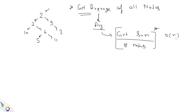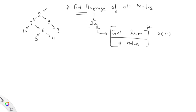Similarly, to get the number of nodes, we traverse the complete binary tree and maintain a count variable, adding one at each node. Once traversal is complete, count holds the number of nodes — also O(n). So if we do both separately, we have two iterations but the overall complexity is still O(n).